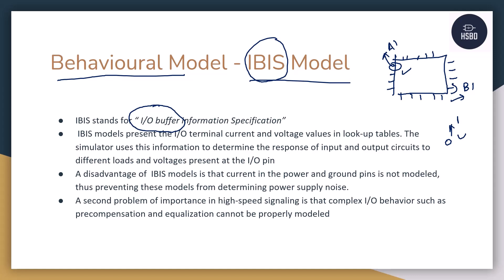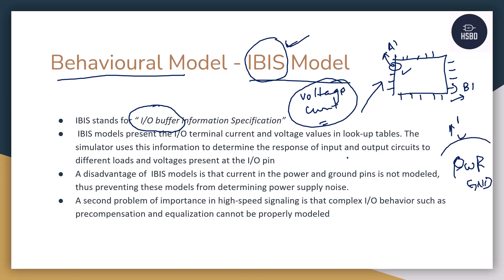The IBIS model file contains information about voltages and currents — at particular voltages and currents, how a particular pin is going to behave. These things are validated through the datasheet, which clearly mentions for each pin how much current is required and how much current must be given for it to change state from low to high and high to low. One of the biggest disadvantages of the IBIS model is that it does not model the power and ground pins.